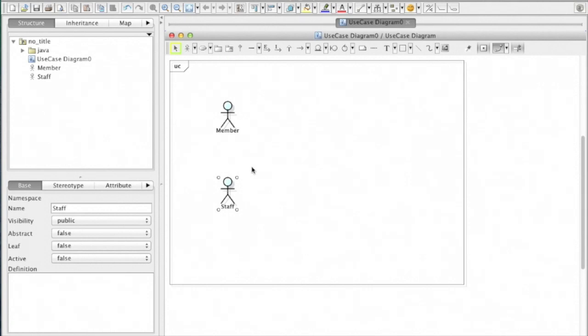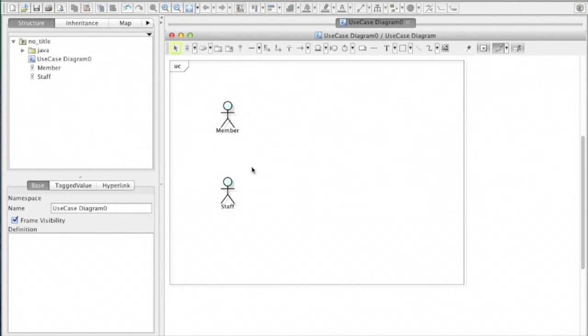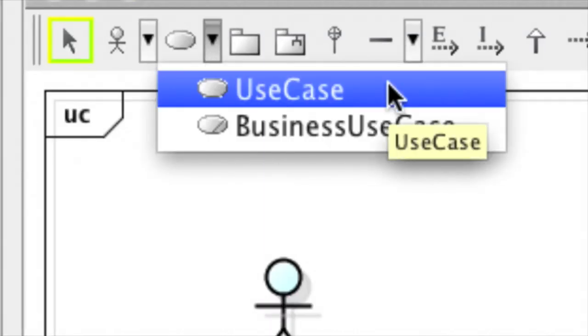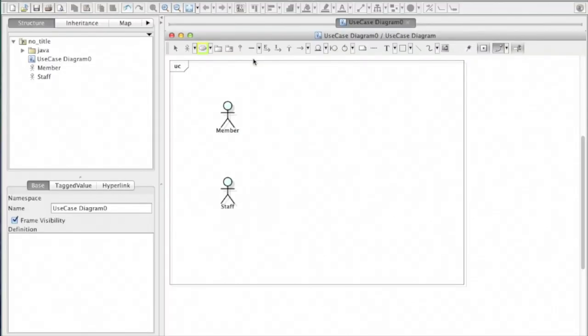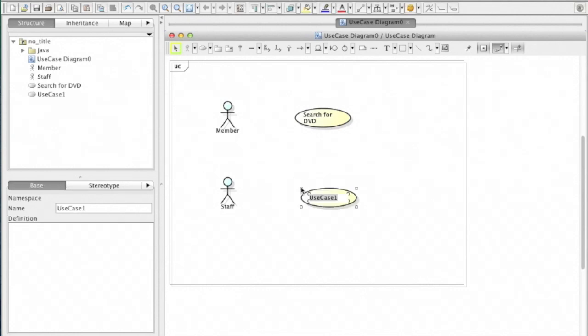Now, create use cases. There are two ways to create use cases. One, it's same as actor. Select use case from a toolbar, then click on a diagram. Name it as search for DVD. Another way to create another use case is simple. Just double click on the diagram. And let's name it as registry member.